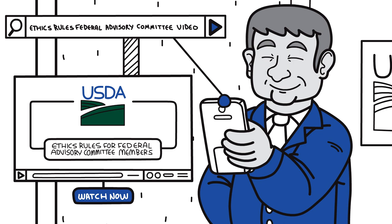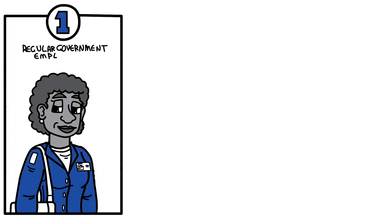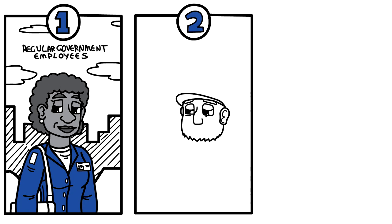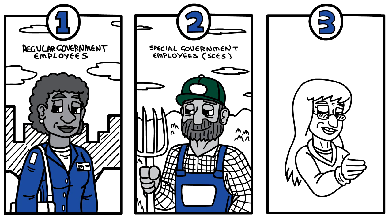First, let's talk about the three categories of federal advisory committee members: one, regular government employees; two, special government employees or SGEs; and three, representatives.